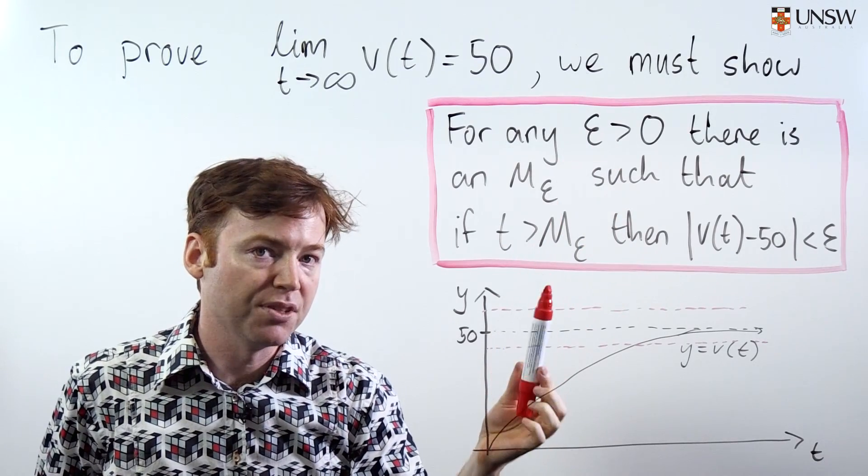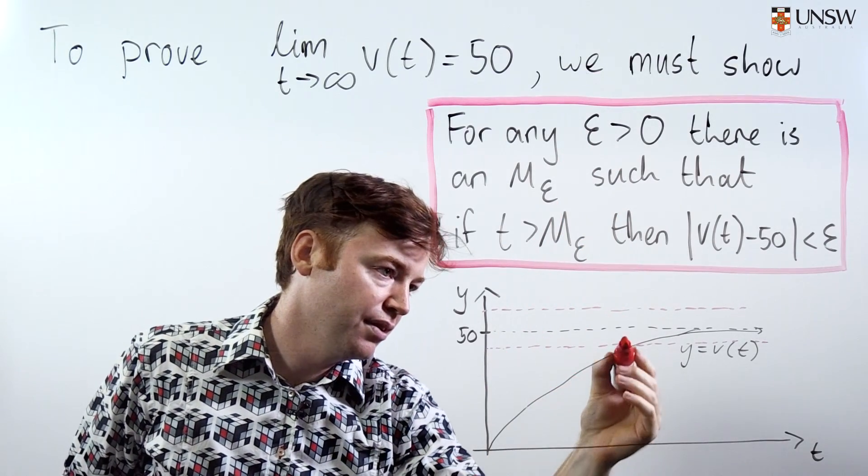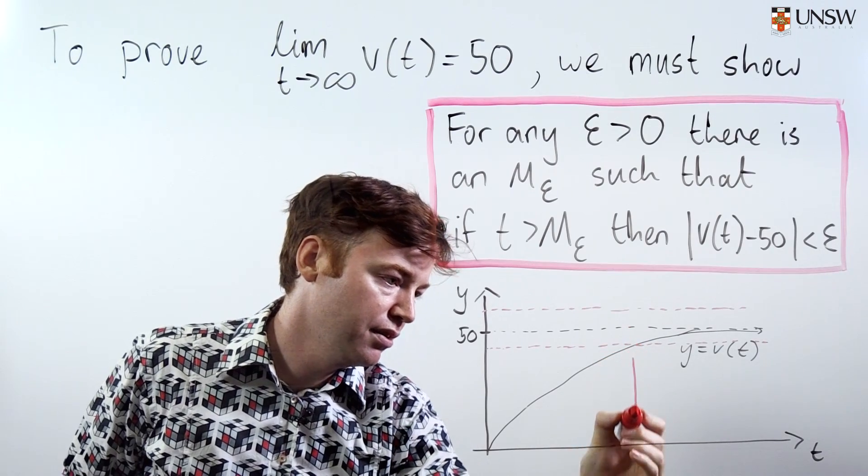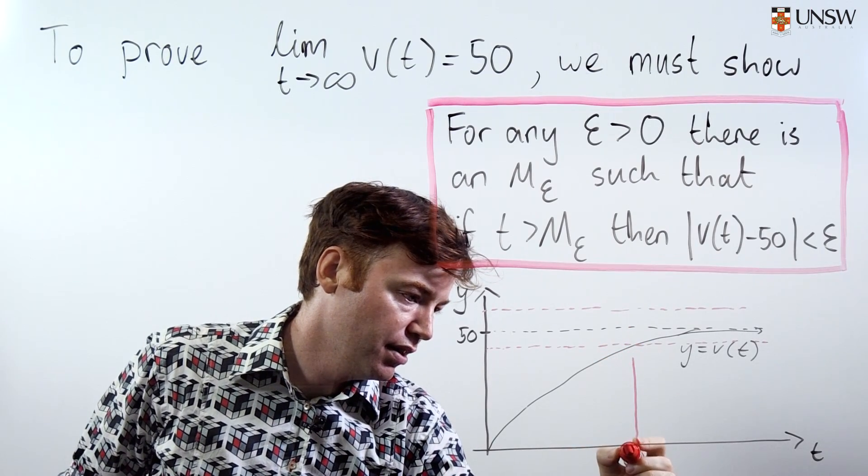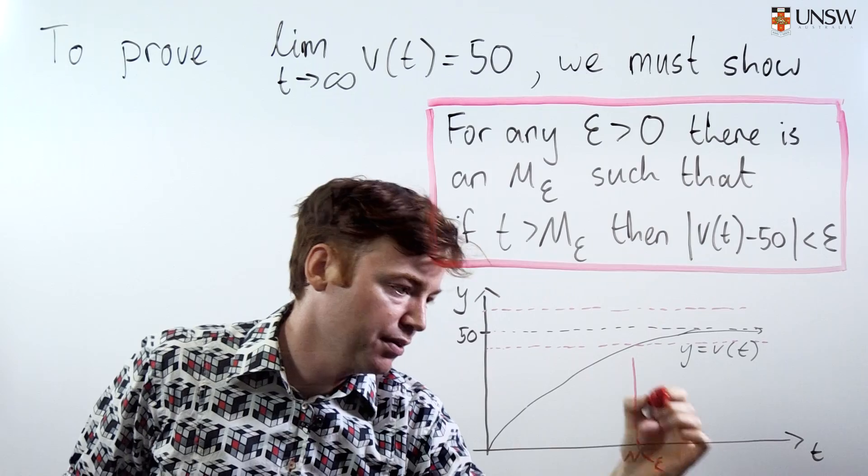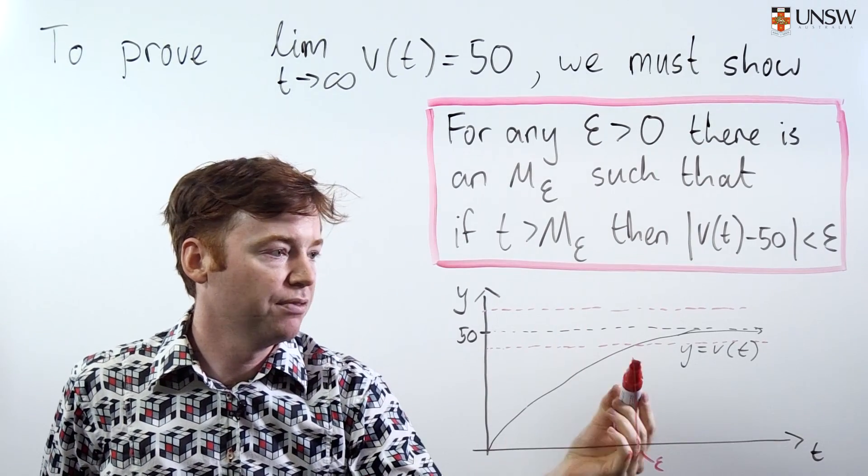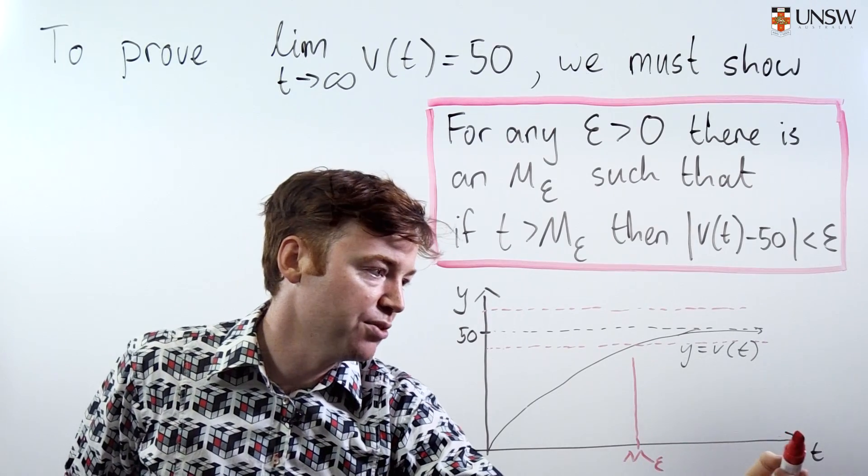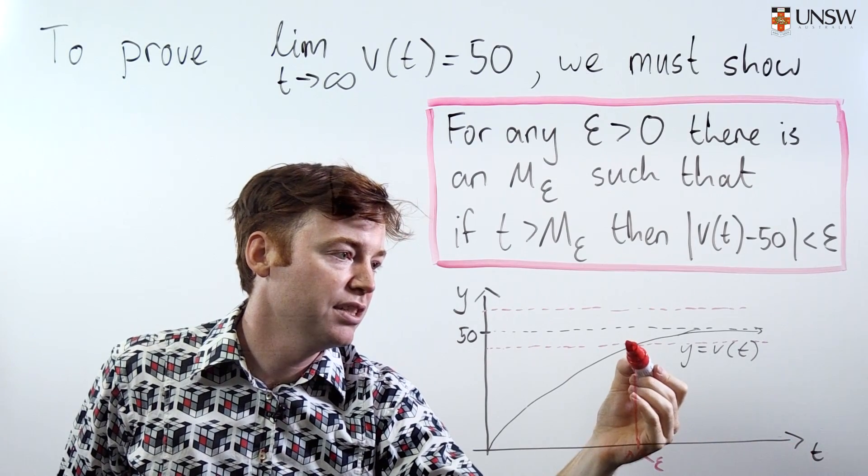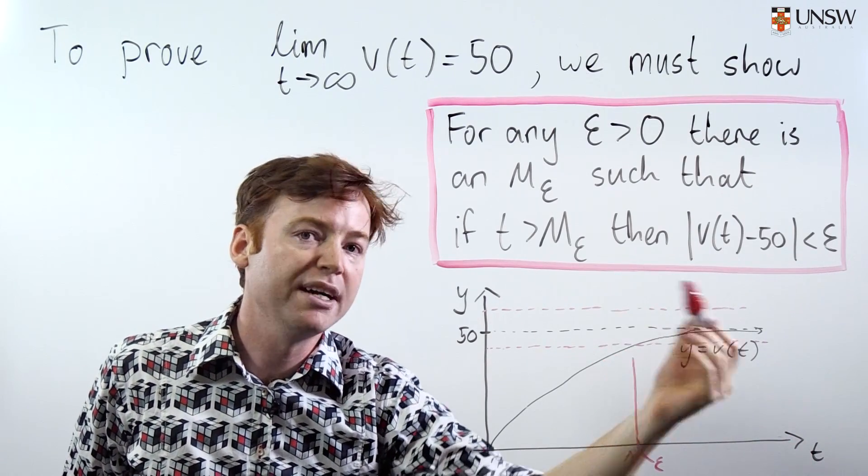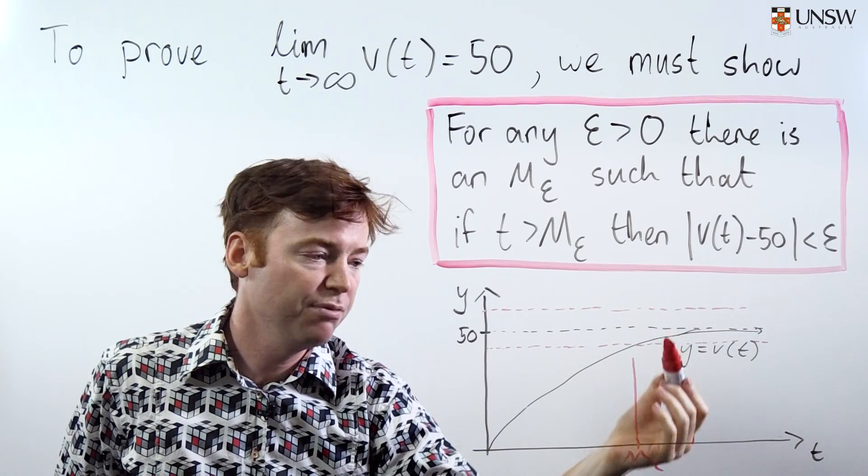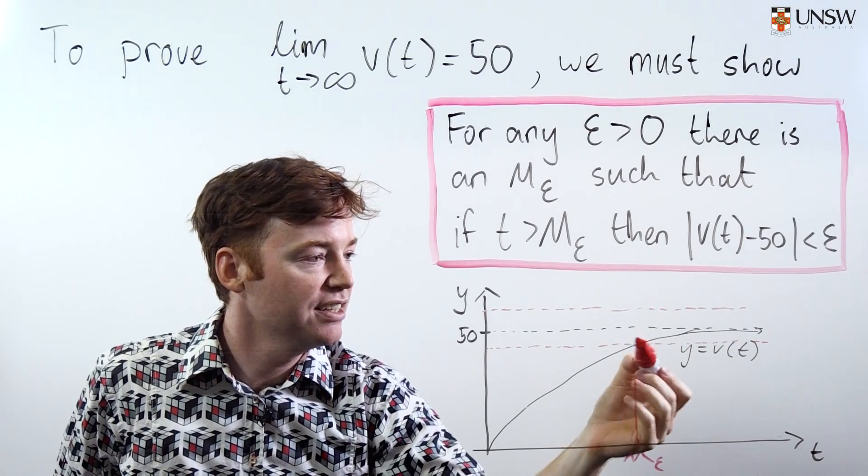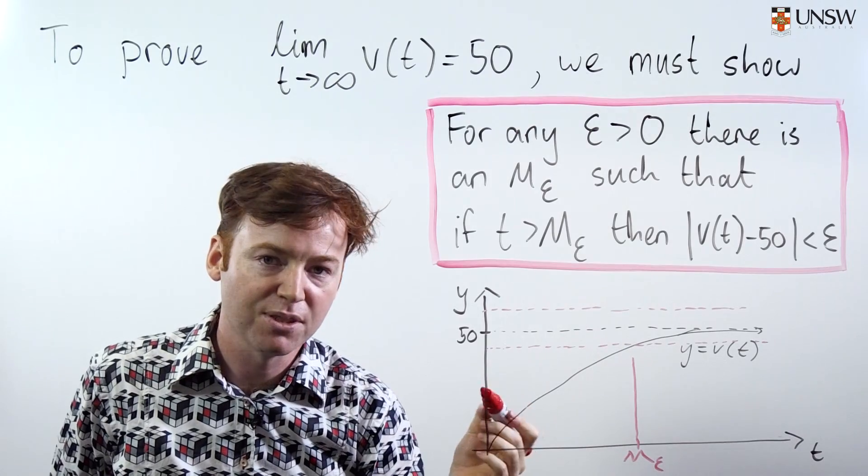What this is saying is that for any epsilon, there is some point M epsilon on the graph that might be here, such that for all t values bigger than M epsilon, so that's all the t values over here, the function is inside the sausage, always inside the sausage. For every value of t, the function is within this epsilon sausage of its limit.